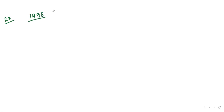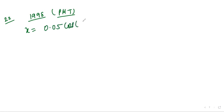Question 22, asked in 1998 PMT: The displacement of a particle in simple harmonic motion is given as x = 0.05 cos(4πt + π/4). Find the frequency of motion.